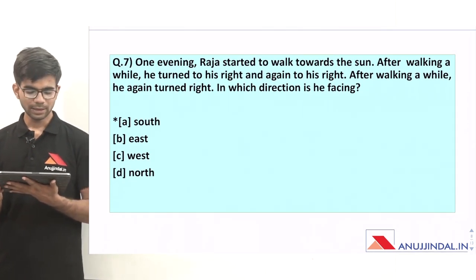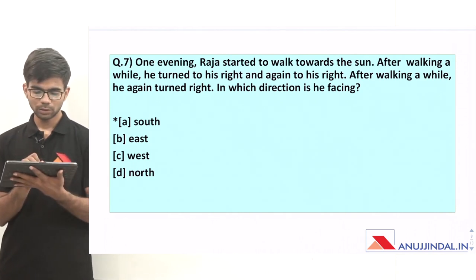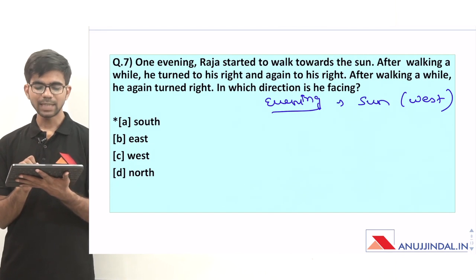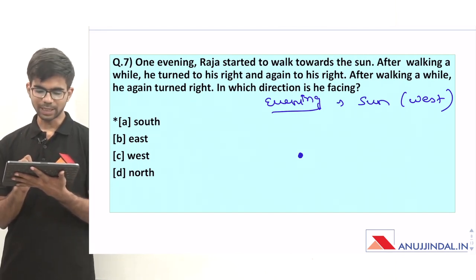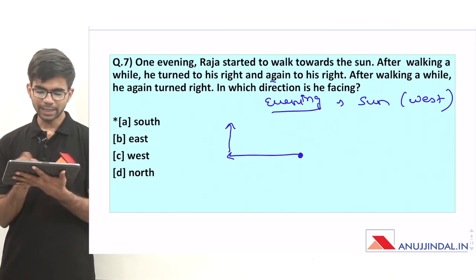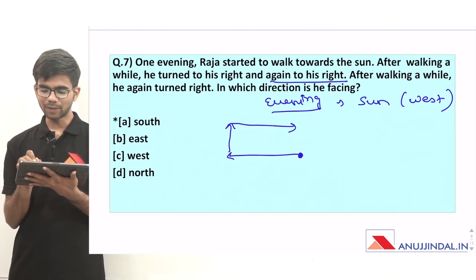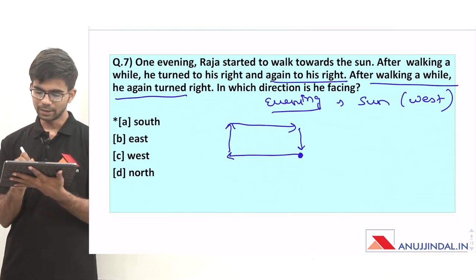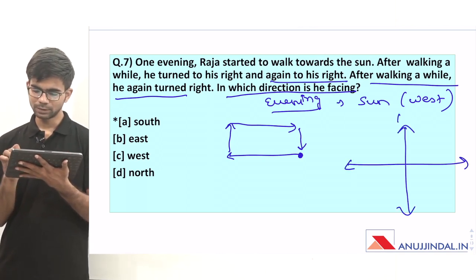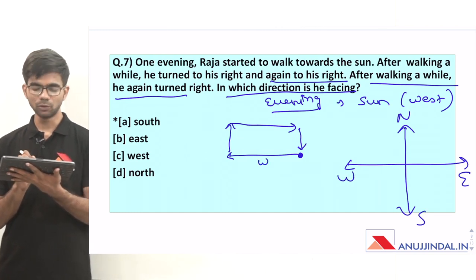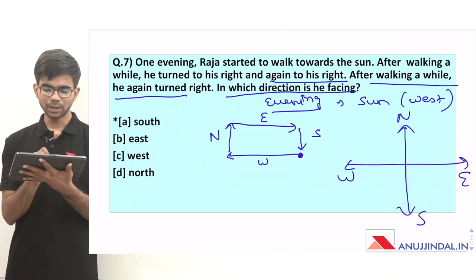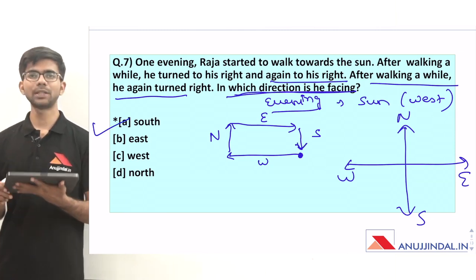Question 7: One evening Raja started to walk towards the sun. In the evening the sun is in the west, so Raja is walking in the west direction. After walking a while, he turned to his right — facing north. Then again to his right — facing east. Then again to his right — facing south. So the question asks in which direction is he facing: finally he is facing south. The correct option is option A, south.